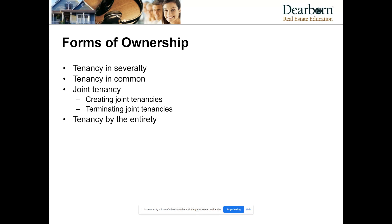Tenancy in common can allow for unequal shares of interest in the property. In both tenancy in severalty and tenancy in common, you can devise your property. Devise means to will real property — D-E-V-I-S-E. You can also sell it, alienate it, encumber it — basically you have the full bundle of rights. I'm mentioning devise specifically because when we get into the next two ways to take title, you essentially give up the ability to devise the property, meaning to will real estate.